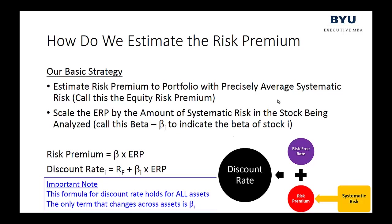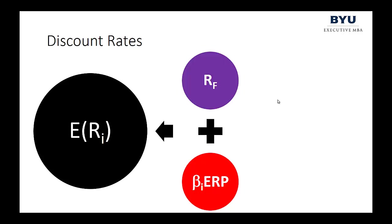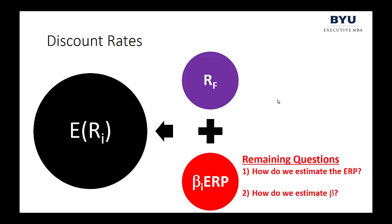The risk-free rate is the expected return on a theoretically riskless asset plus the expected inflation premium — that doesn't change whether you're talking about Delta or Nike. The equity risk premium is the expected return above the risk-free rate to a perfectly diversified portfolio with average systematic risk — that doesn't change either. The only thing that changes between Nike and Delta is that beta. So our discount rate is defined as the risk-free rate plus beta times the equity risk premium, and we have two remaining questions: how do we estimate the equity risk premium, and how do we estimate beta?